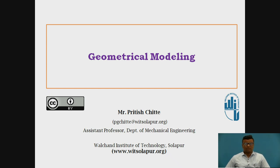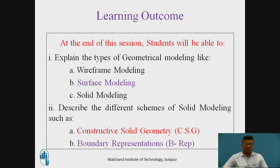This will be our fourth session, in which we will discuss geometrical modeling. In our last sessions, we discussed geometrical transformation, their numericals and the concatenation method. The learning outcomes are: students will be able to explain the different types of geometrical modeling like wireframe, surface, and solid modeling. Also they can describe the different schemes of solid modeling like Constructive Solid Geometry (CSG) and Boundary Representation (B-rep).